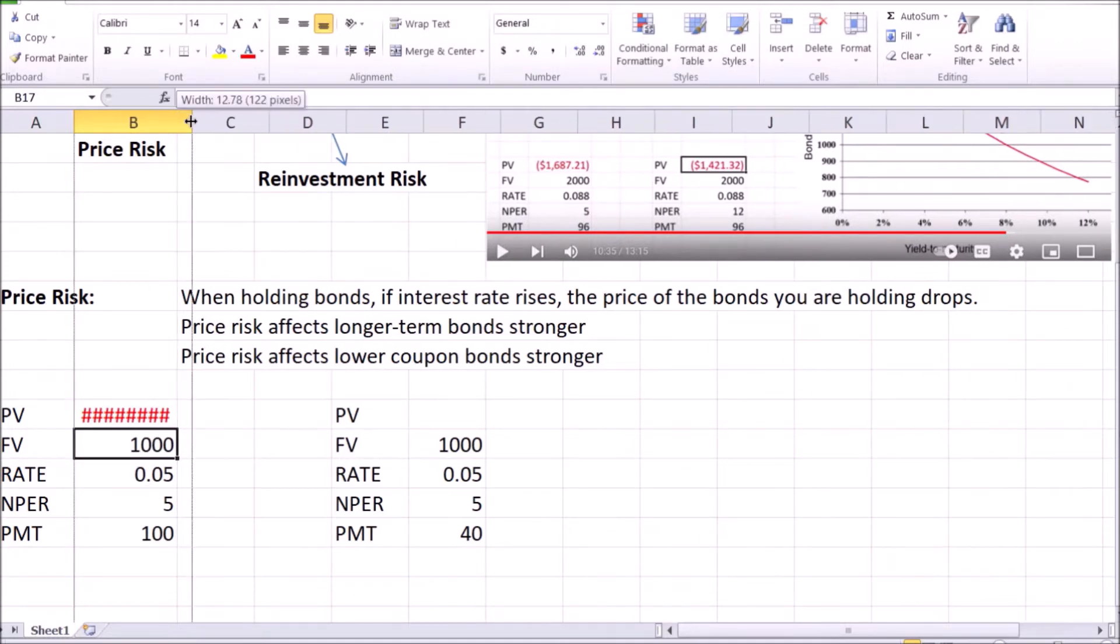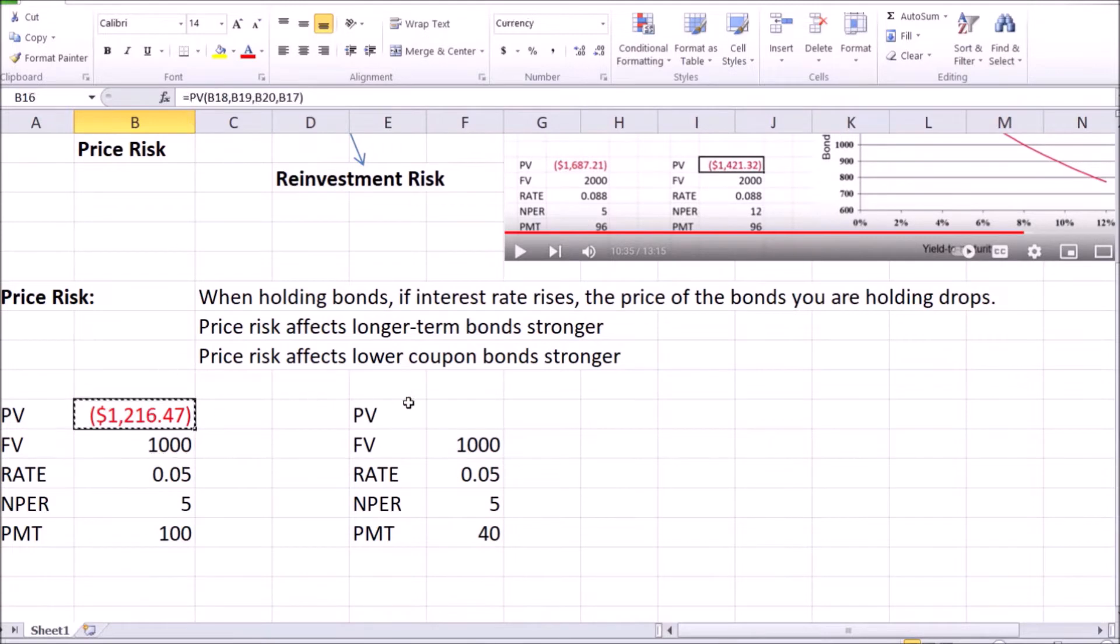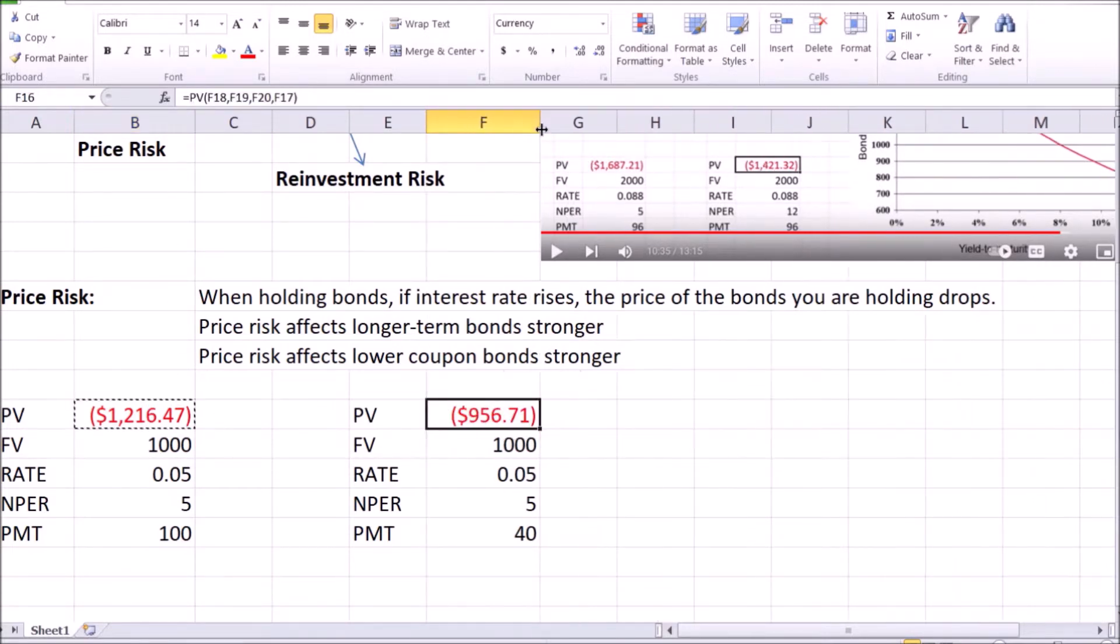Let's give it a bit more space to see the price and copy this formula for the other bond and give it more space as well. Let me adjust the face value so the prices of the two bonds are more or less similar. After all, we're looking at price risk, so let's start with relatively similar prices. So let me adjust this to $1,300 as the face value, then the prices of both bonds are somewhere around $1,200. Similar enough.